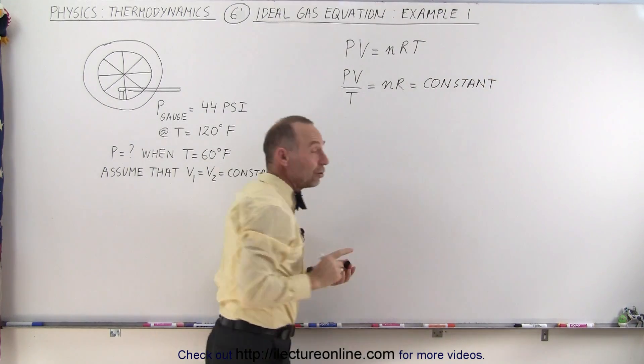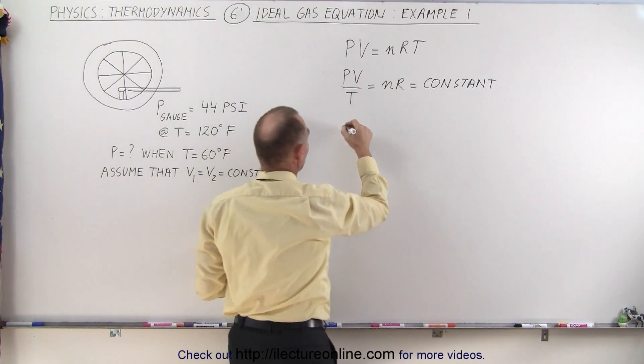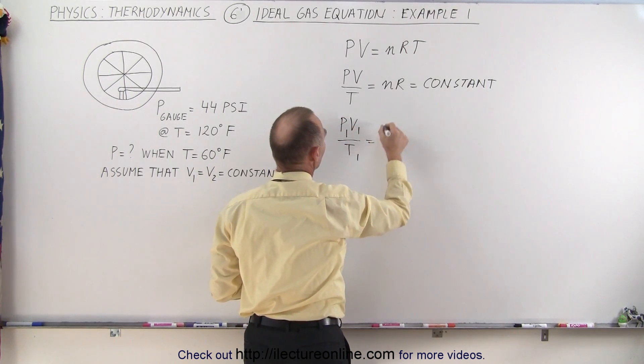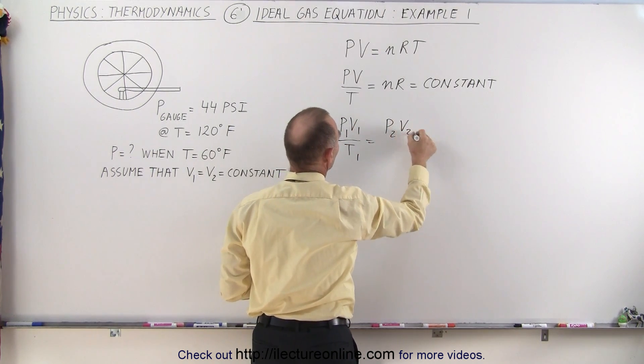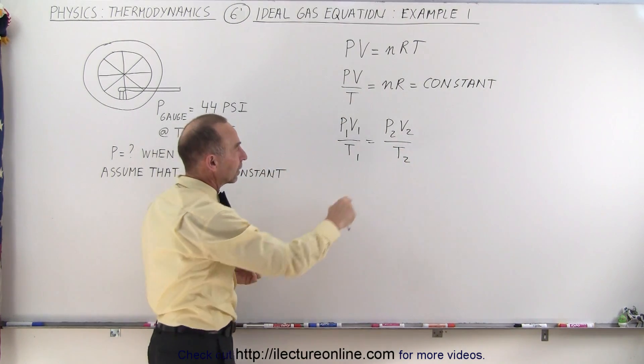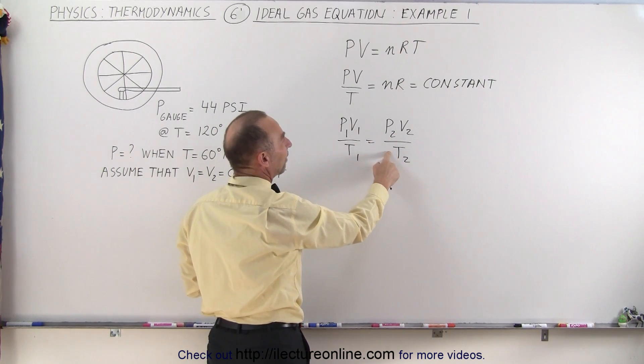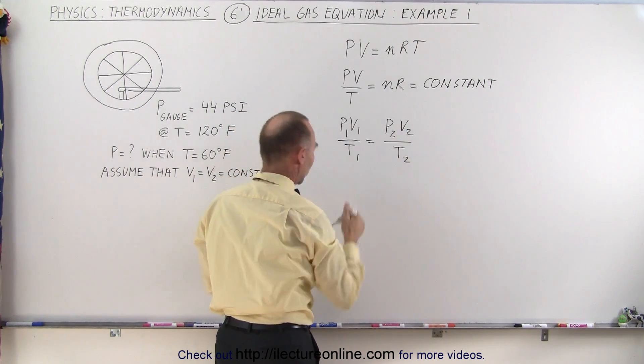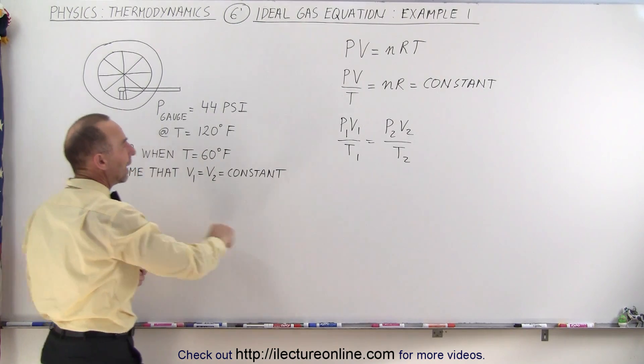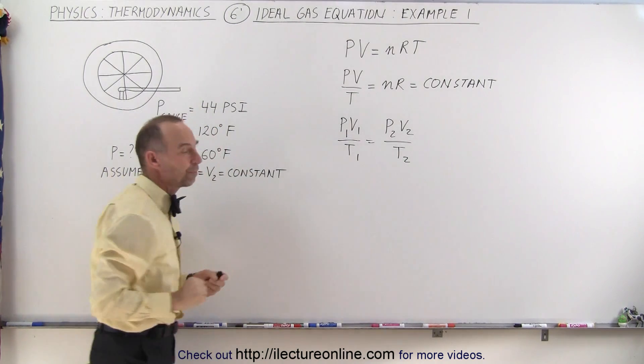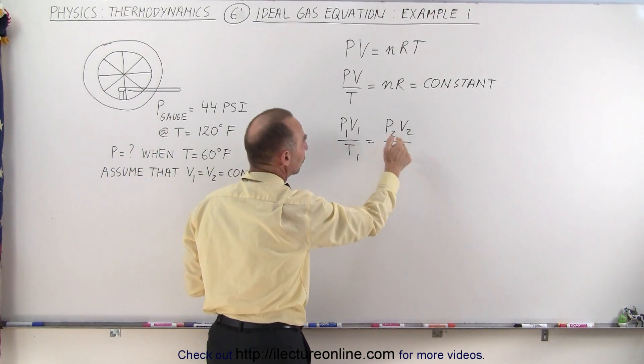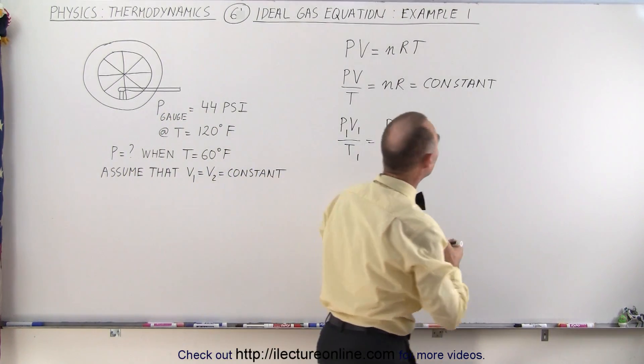That means that you can then say that initially, P1 V1 divided by T1 is equal to P2 V2 divided by T2. So therefore, if you know all the conditions before, and you know two to three conditions afterwards, you can then calculate the third one. In this case, we're trying to find the pressure, P2, after the temperature changes. Now, of course, in this case, since V1 is equal to V2, that remains constant as well.